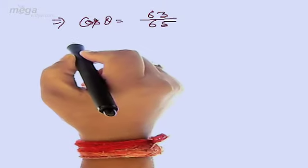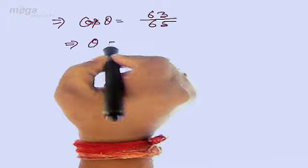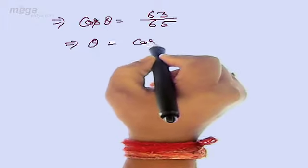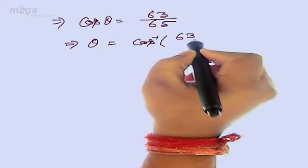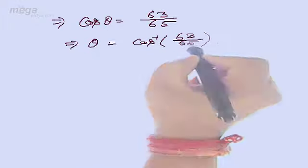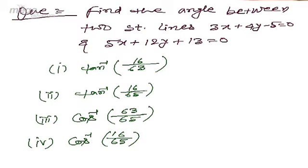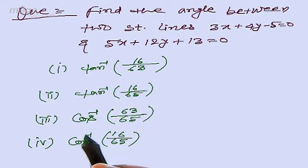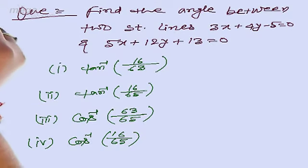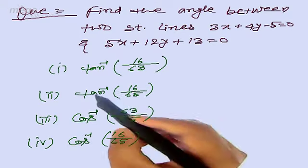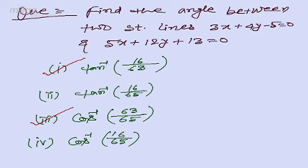So from here, theta is equal to cos inverse 63 upon 65. Student, you can see cos inverse 63 upon 65 is also one of your options, so it is a correct option. It means your correct options are the first and the third. These two are correct options.